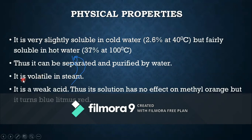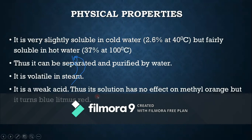Boric acid is volatile in steam. It is a weak acid and has no effect on methyl orange indicator — a key point to remember. However, if litmus paper is used, it turns red, confirming it is an acid.